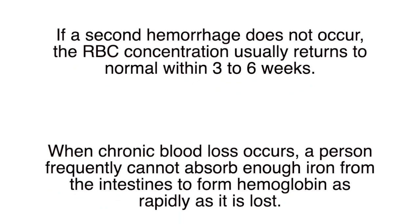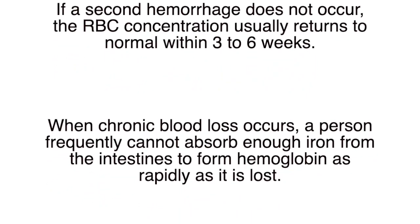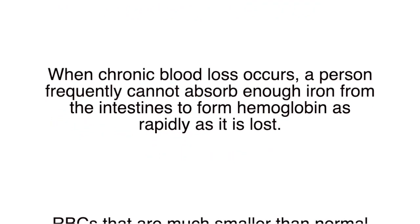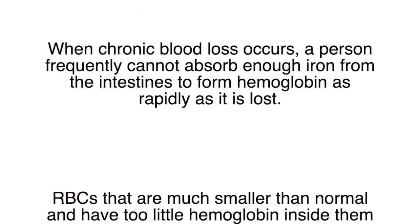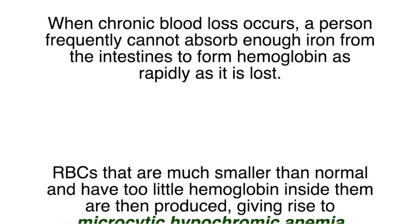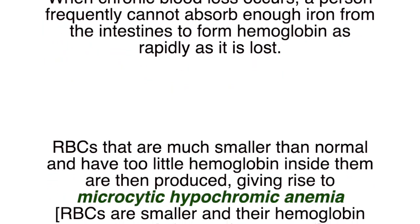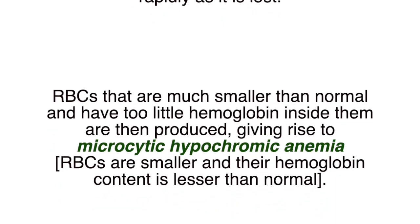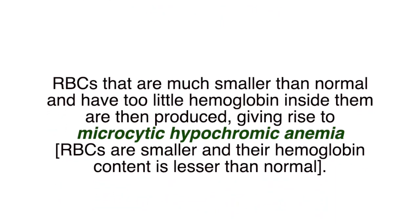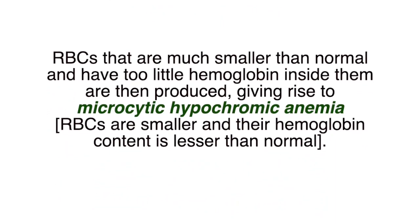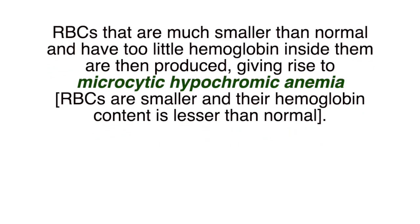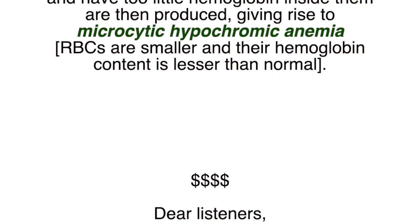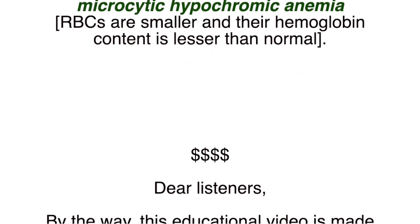When chronic blood loss occurs, a person frequently cannot absorb enough iron from the intestines to form hemoglobin as rapidly as it is lost. RBCs that are much smaller than normal and have too little hemoglobin inside them are then produced, giving rise to microcytic hypochromic anemia, where RBCs are smaller and their hemoglobin content is less than normal.